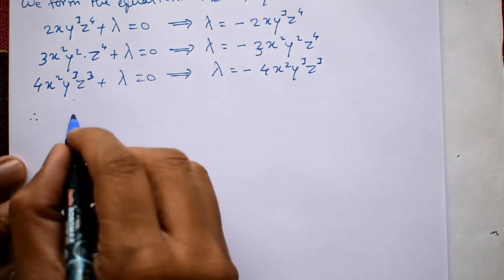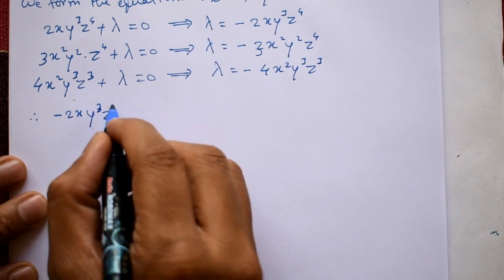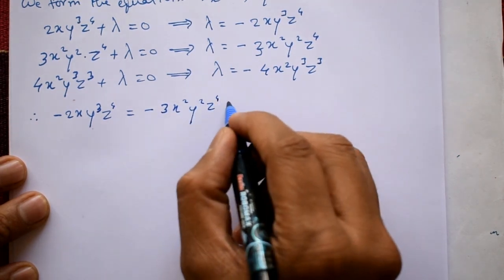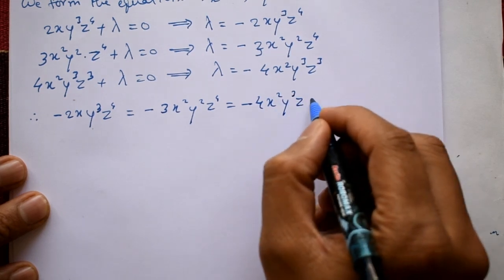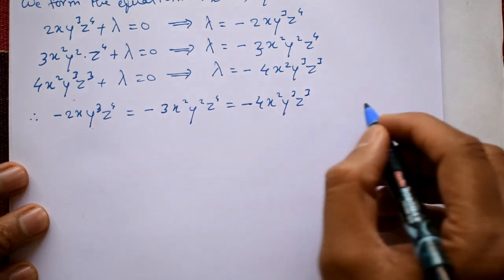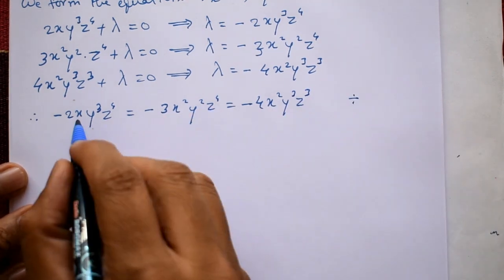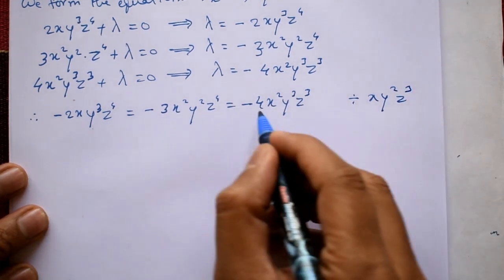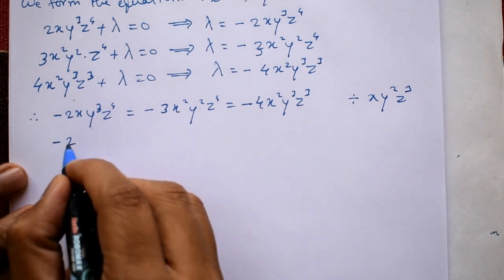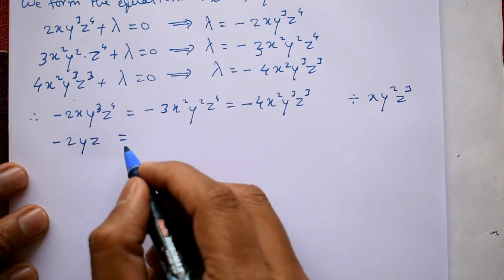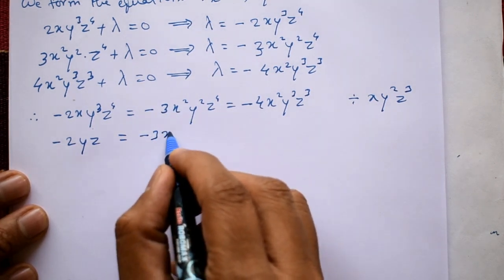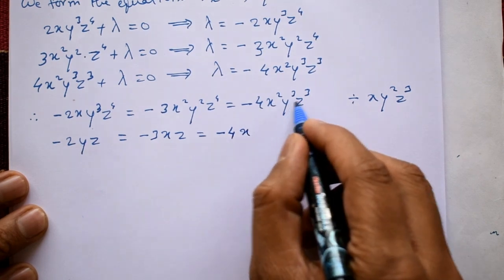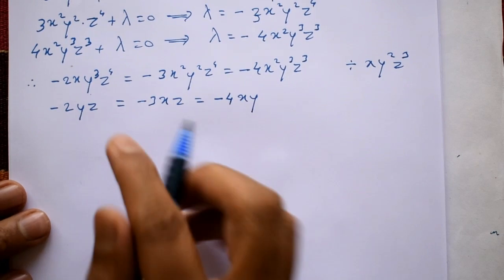Equating the lambda values on the right-hand side: minus 2xy³z⁴ equals minus 3x²y²z⁴ equals minus 4x²y³z³. Dividing each term by xy²z³, this simplifies to: minus 2yz equals minus 3xz equals minus 4xy.